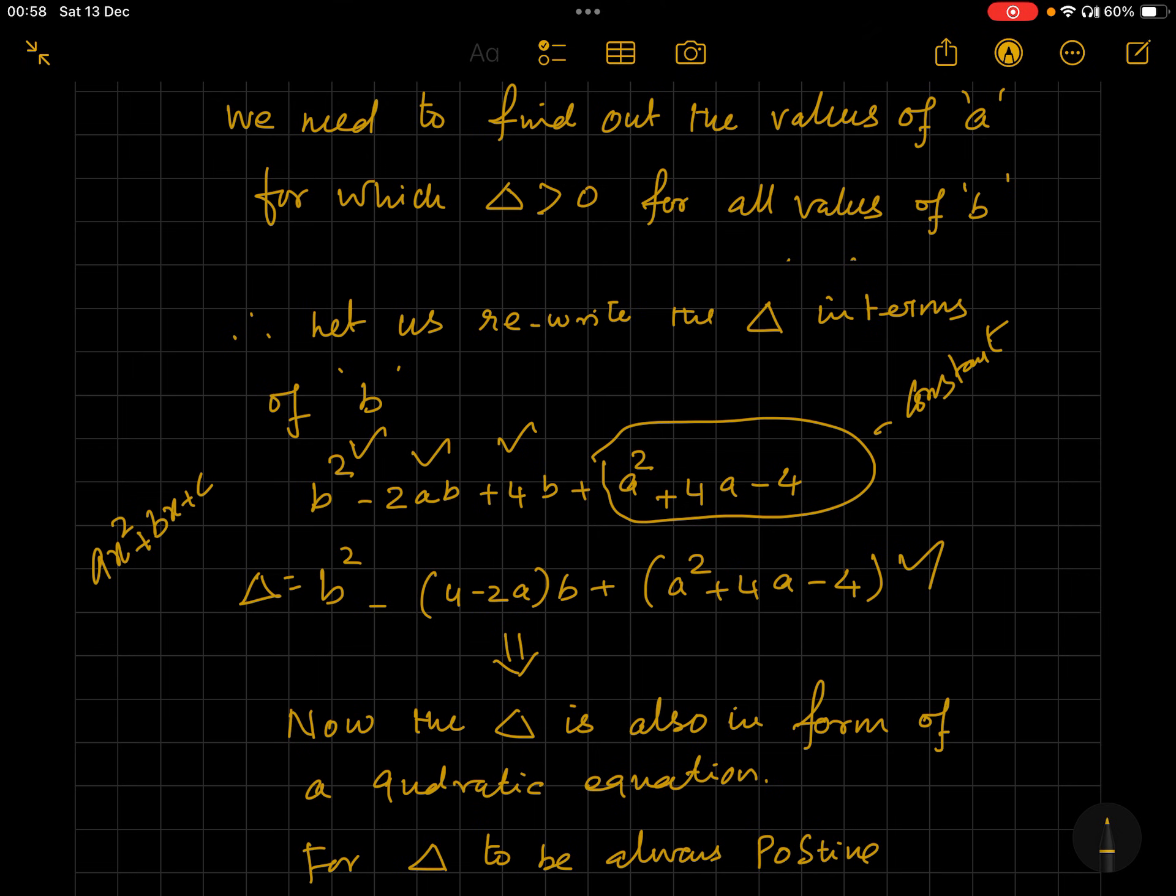This itself becomes another quadratic. What do we want? We want the delta (discriminant) to always be greater than zero because the roots are to be unequal and real. For that, this quadratic expression to always be greater than zero, let it be f